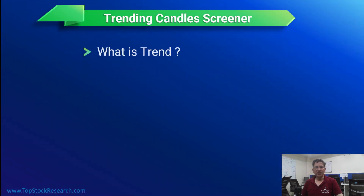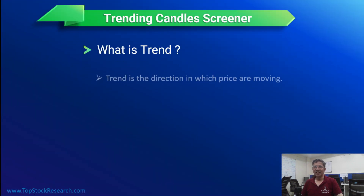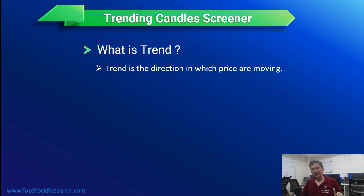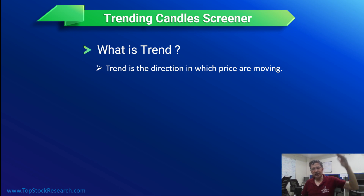So what is a trend? A trend is when a price is moving in a certain direction — that's called trending. When the price is generally moving continuously upwards it's called an uptrend; if it is going down continuously it's called a downtrend.